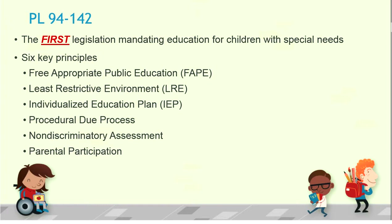Procedural due process is guaranteed by the Constitution's amendments, meaning we have the right to hearings and to have counsel. It also gives parents and students the right to be part of the special education process. Non-discriminatory assessment ensures we evaluate kids using assessments that are not biased and will not needlessly place a child into special education. Finally, parental participation is not just encouraged — it's a right and a requirement, from beginning to end.